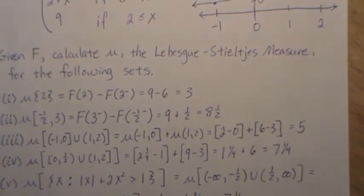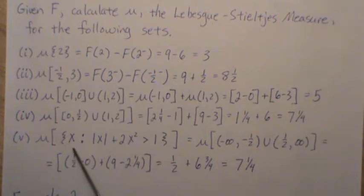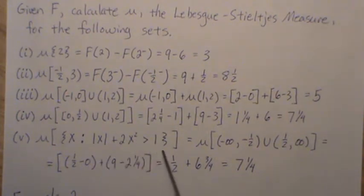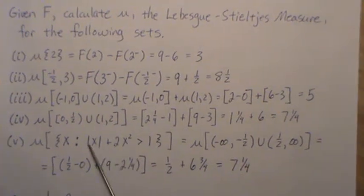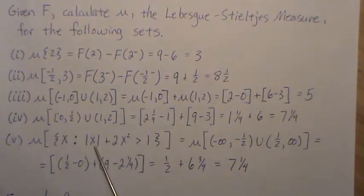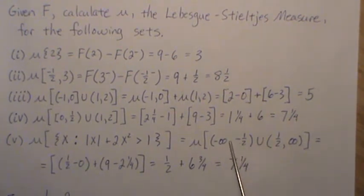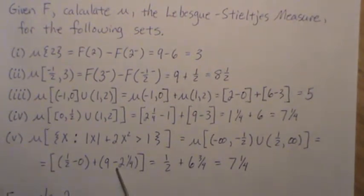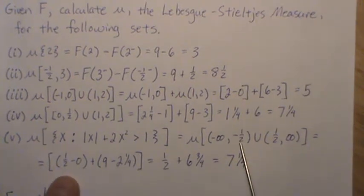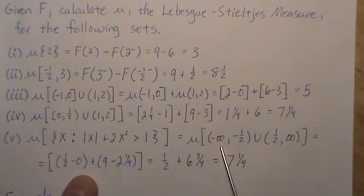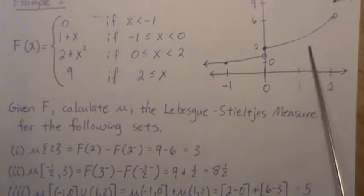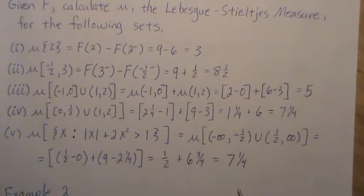Now the measure of the set of all x such that |x + 2x²| > 1. Doing the math and realizing this is an absolute value, it's the union of two disjoint sets. Since they're disjoint, it's the sum of the measures. With the correct values for each, the answer is 7 and 1/4.